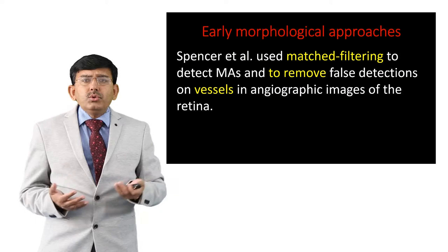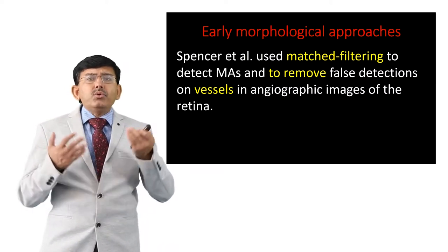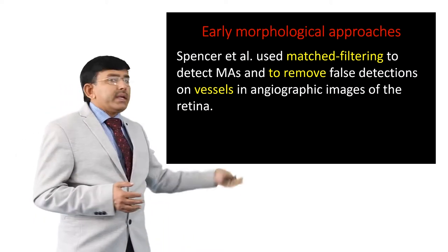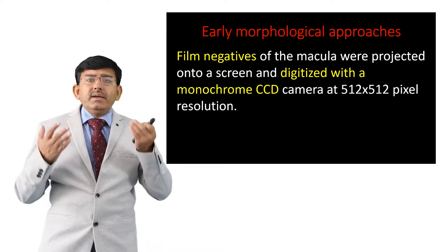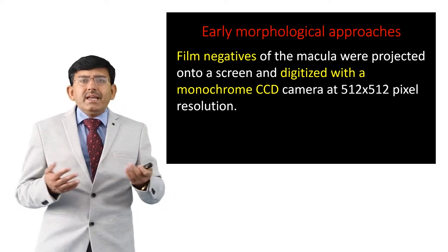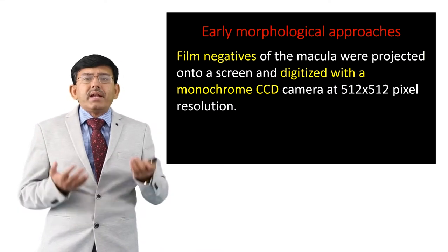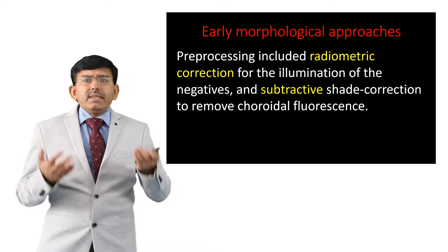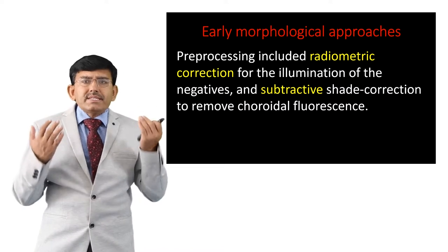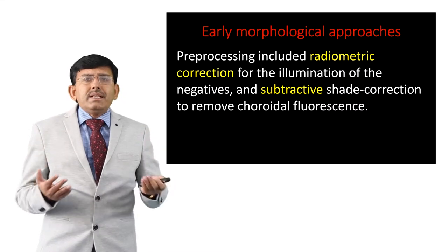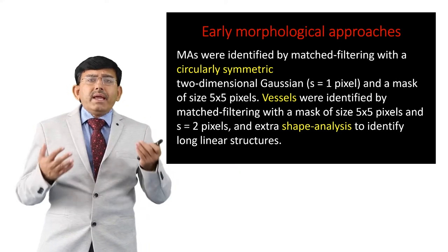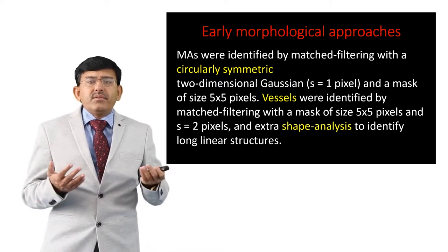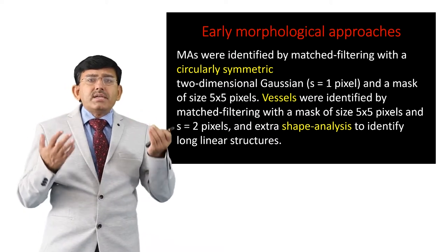Spencer and their group used matched filtering to detect microaneurisms and to remove false detections on vessels in angiographic images captured during mass screening. Film negatives of the macula were projected onto a screen and digitized with a monochrome CCD camera at 512 by 512 pixel resolution. Pre-processing included radiometric correction for illumination of the negatives and subtractive shade correction to remove choroidal fluorescence. Microaneurisms were identified by matched filtering with a circularly symmetric two-dimensional Gaussian where sigma equals 1 pixel and a mask of size 5 by 5 pixels.